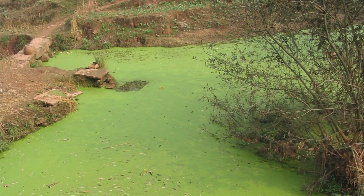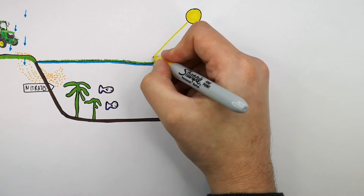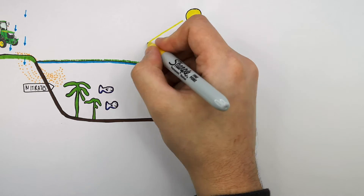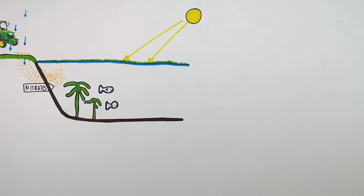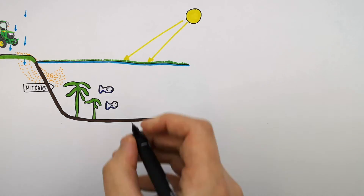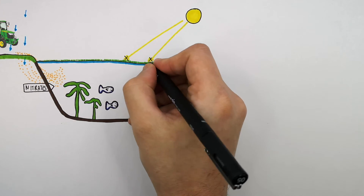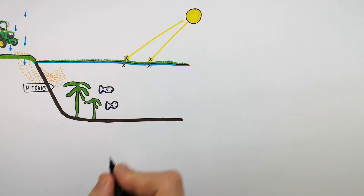This algal bloom that covers the lake is going to prevent sunlight from entering beneath the water surface, so the sunlight is not able to enter beneath the surface of the water.